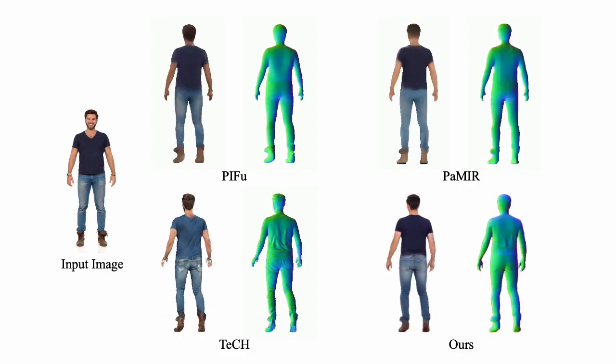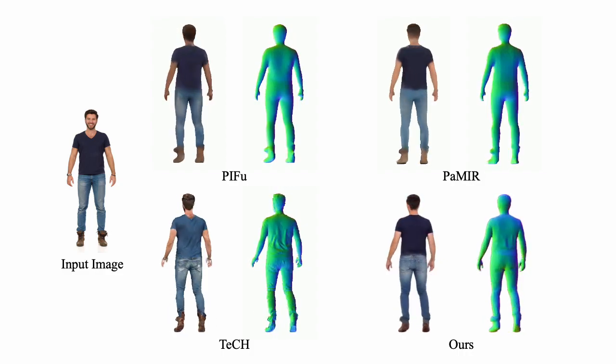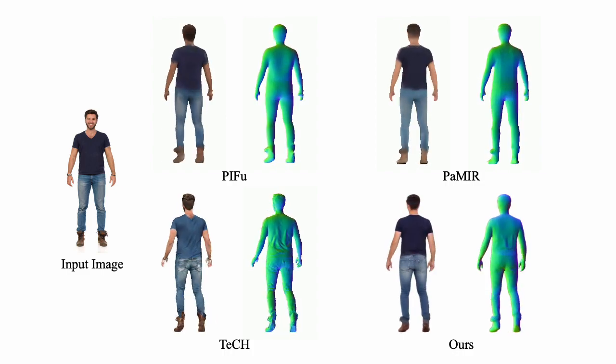As shown in this man example, TeCH generates a realistic blue t-shirt texture on the back, but there is still a noticeable difference from the dark blue texture in the input image.